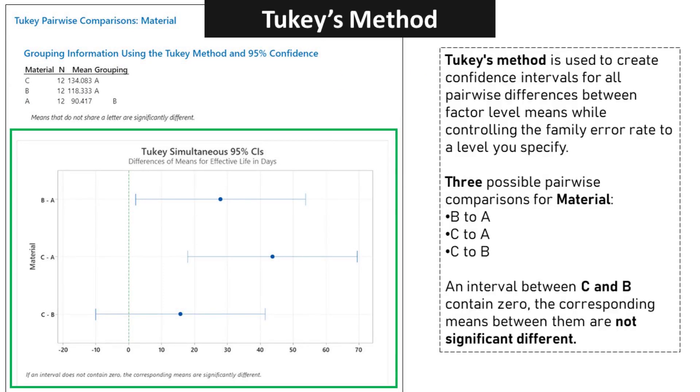Tukey's method is used to create confidence intervals for all pairwise differences between factor-level means while controlling the family error rate to a level you specify. Three possible pairwise comparisons for Material. An interval between C and B contains zero, so the corresponding means between them are not significantly different.